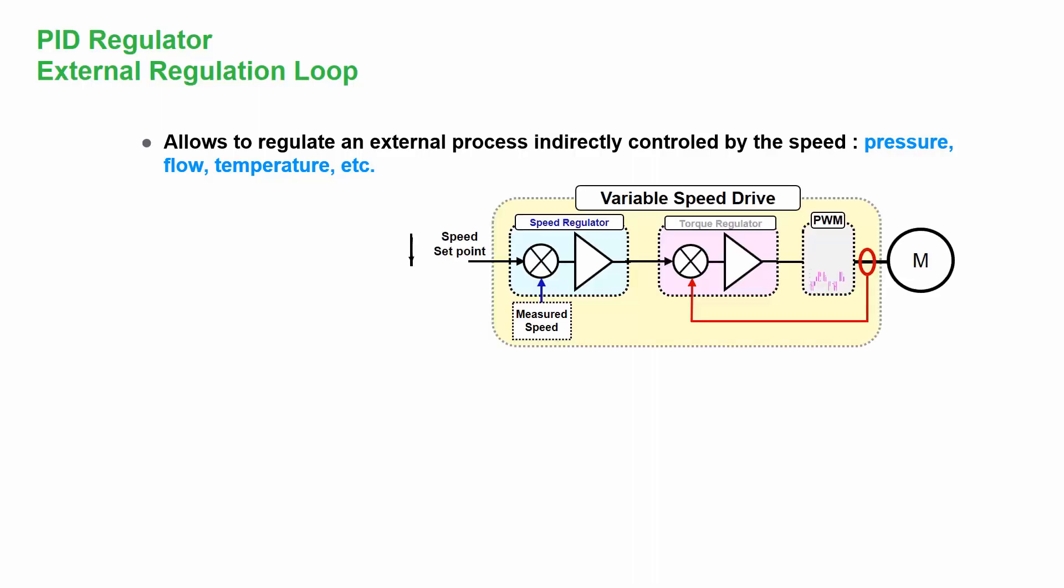So what do we have in a normal or average situation? We have a variable speed drive to which we set a speed set point, and the drive with its own regulators is trying to keep the set point speed on the motor.